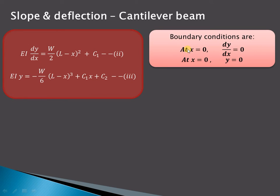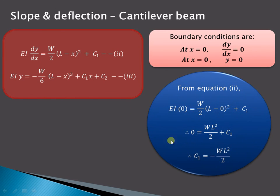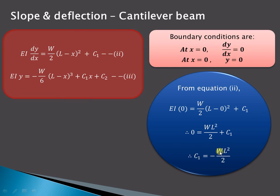Using the second and third equations and substituting the boundary conditions we can find the two unknowns C1 and C2. Applying the first boundary condition — at x equal to 0, dy/dx equal to 0 — and substituting into equation 2: EI·(0) equals W/2·(L minus 0)² plus C1, which gives 0 equals WL²/2 plus C1, so C1 equals minus WL²/2.